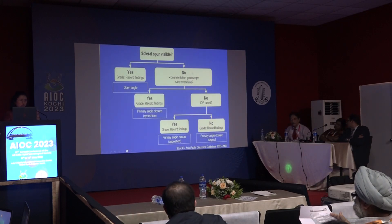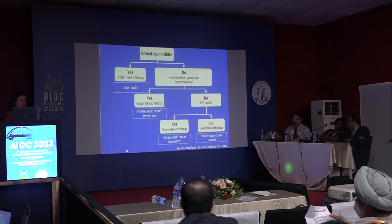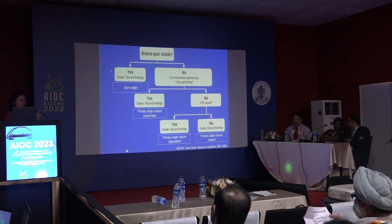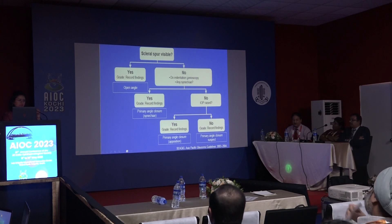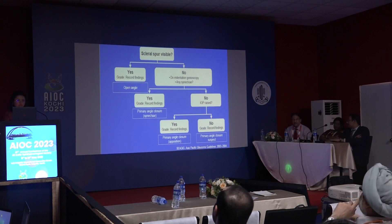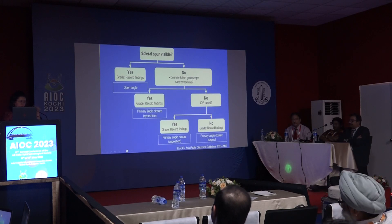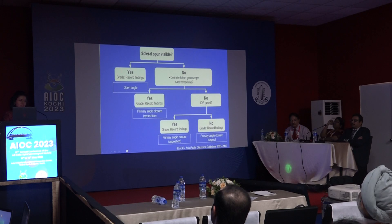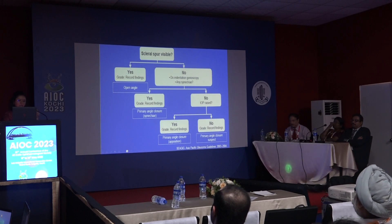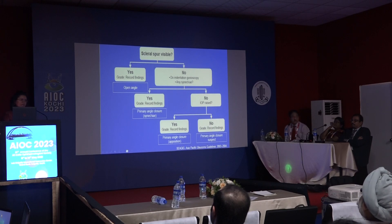After gonioscopy, you must determine whether the angle is open or not. If you can see the scleral spur, the angle is open. If not, perform indentation to determine if it is synechial closure — if a synechia is present it is synechial closure; if not, check the IOP. If the IOP is raised, it is PAC of appositional type; if the IOP is also not raised, it is PACS.